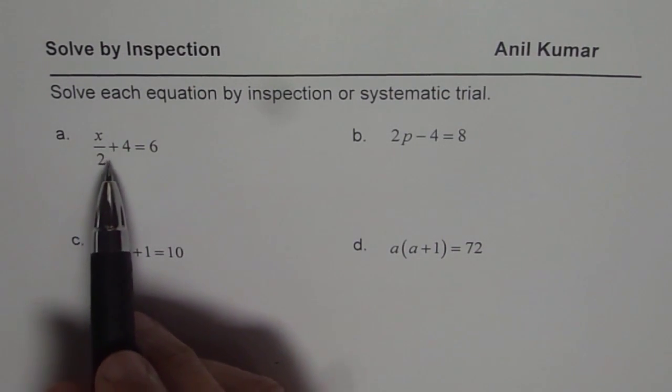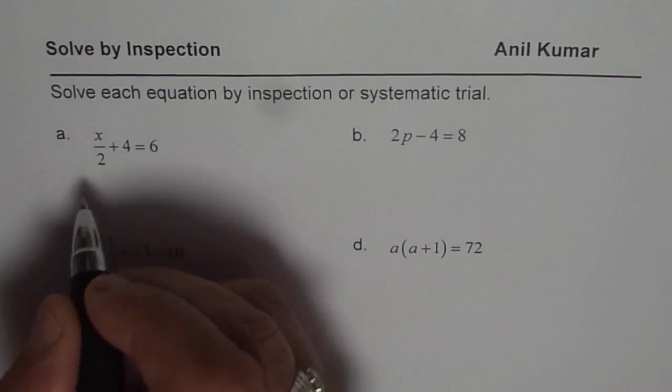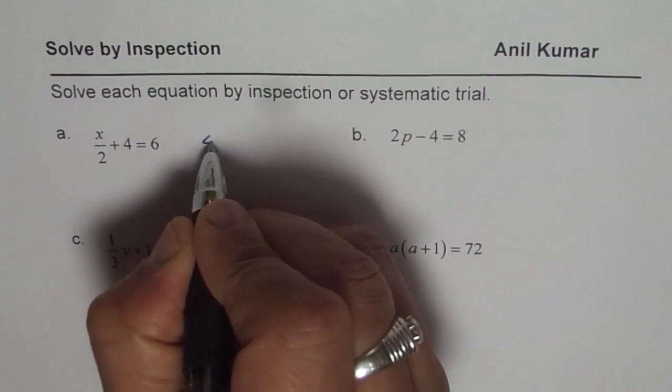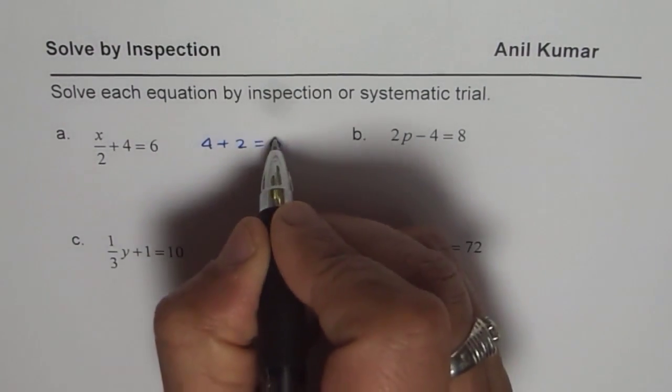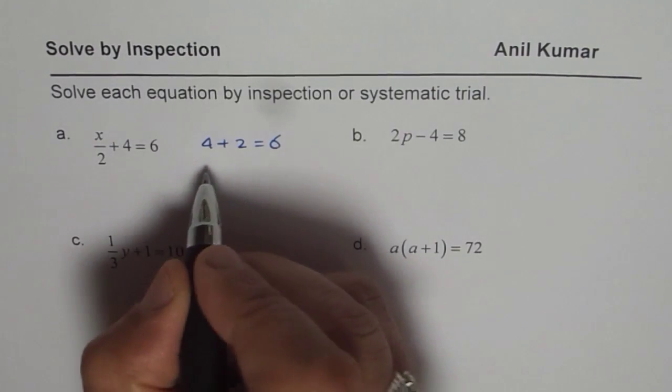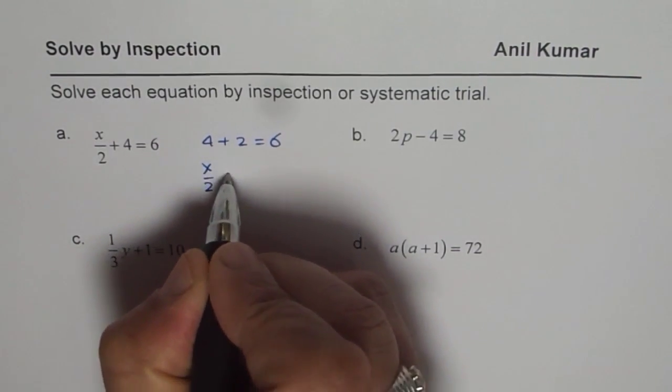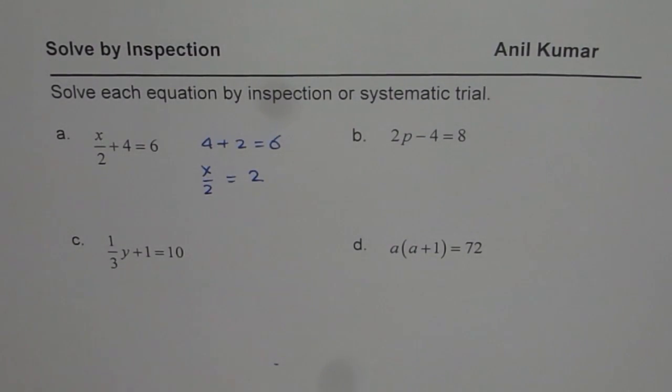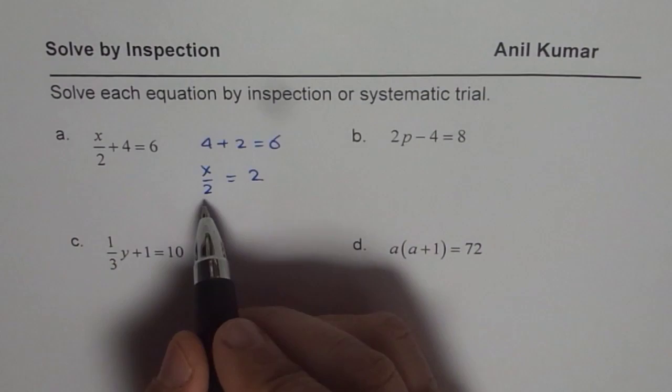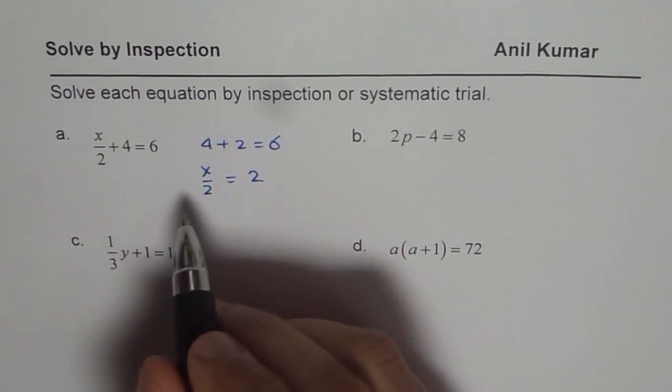We can say 4 plus some number is 6. And I know that number should be 2. I know 4 plus 2 is 6. So we think like this. We know 4 plus 2 equals to 6. And therefore, we say half of the number should be equal to 2. Does it make sense? Yes, it does. So if you interpret like this, it becomes very easy to solve by inspection.